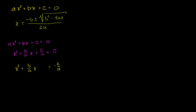And I left a space there so that we can complete the square. As you saw in the completing the square video, you literally just take half of this coefficient right here and you square it. So what is b over a divided by 2? That is just b over 2a. And of course we are going to square it. We add b over 2a squared to both sides, so you have a plus b over 2a squared there as well.